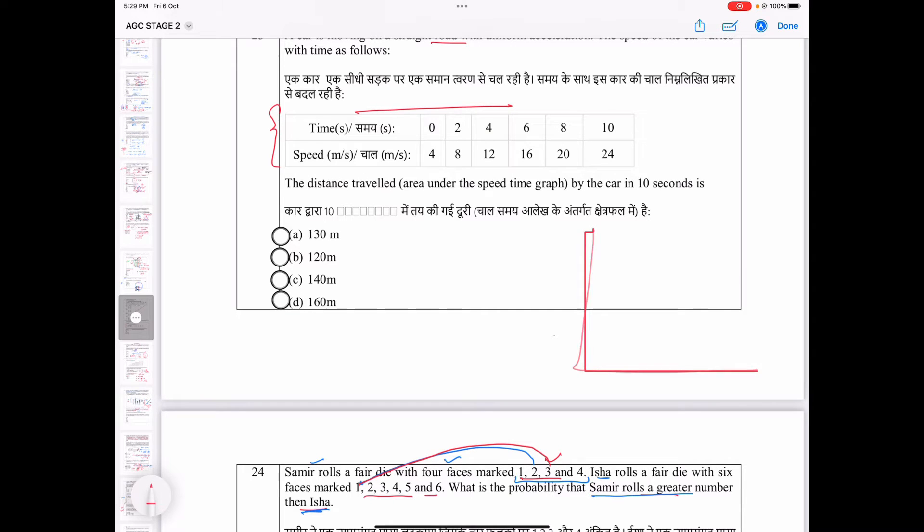Students, these are the X and Y axes. Suppose X axis represents time in seconds and Y axis represents speed of the car. So, here we have 0, 2, 4, 6, 8, 10 intervals given here.